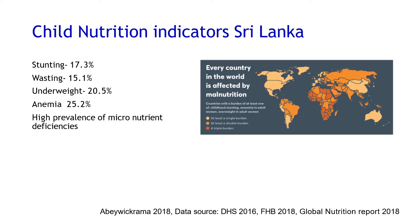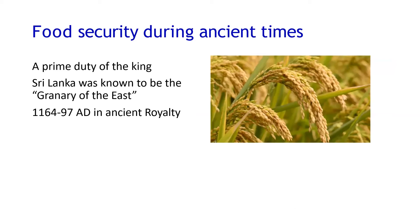With child nutritional indicators, childhood wasting is 15.1% and we are the seventh highest country on wasting — that is a real problem in Sri Lanka. Again, you see the triple burden of malnutrition in children as well. Talking about food security: Sri Lanka has a very strong history and was known as the granary of the East in very ancient times. But now we are really facing problems.